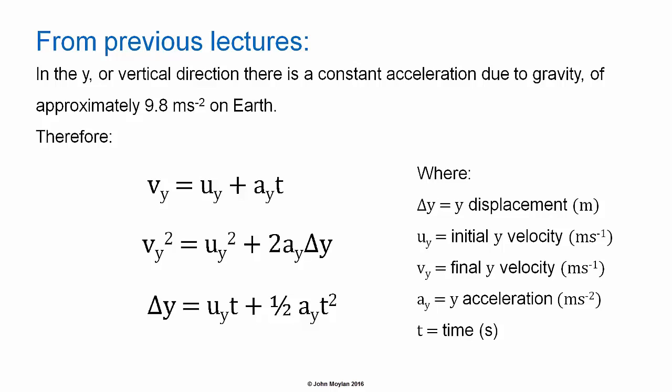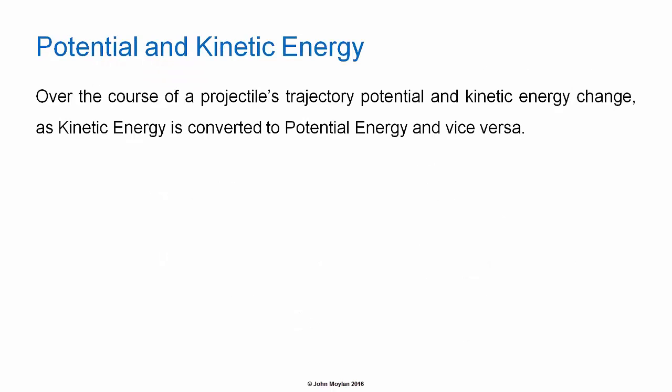The final velocity squared in the Y direction is equal to the initial velocity in the Y direction squared, plus 2 times the acceleration in the Y direction, multiplied by the Y displacement. The Y displacement is equal to the initial Y velocity multiplied by time, plus one half times the Y acceleration, multiplied by the time squared. Potential and kinetic energy of a projectile.